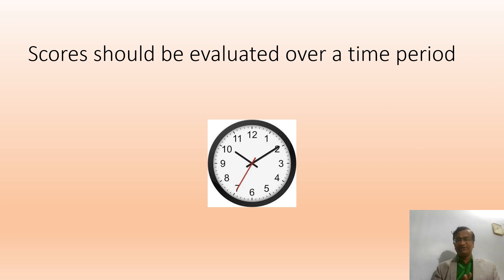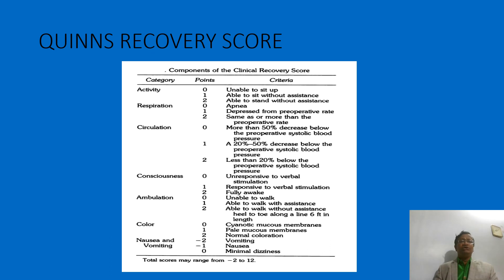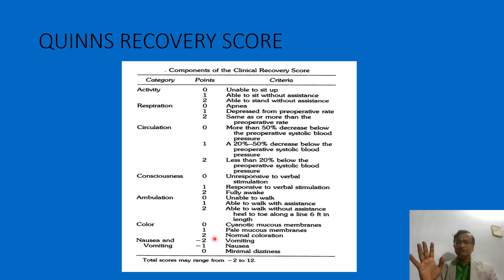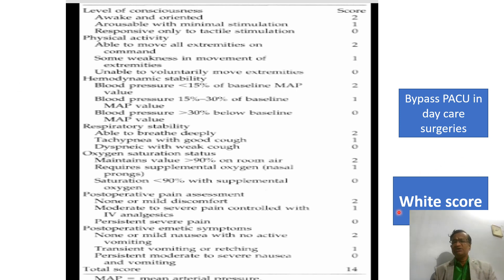These scores should be evaluated over time — for example, comparing scores at 10:00 AM, 11:00 AM, and 11:30 AM to assess improvement in borderline cases. The Twins recovery score covers Activity, Respiration, Circulation, Consciousness, Ambulation, Color, Nausea, and Vomiting. Importantly, vomiting reduces the score by minus two — a single episode of vomiting means the ambulatory patient should not be discharged.